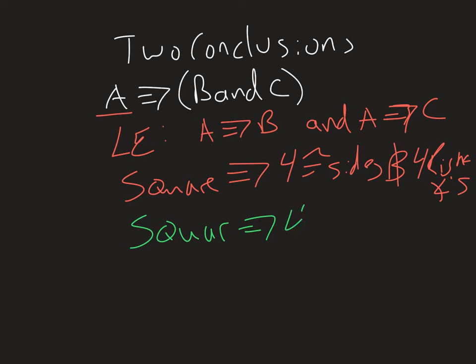So a square implies four congruent sides. True. Also a square has four right angles.